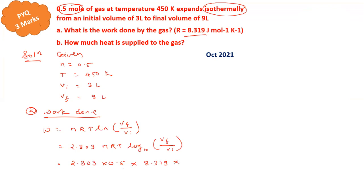And log to base 10, final volume is 9 and initial volume is 3. So this we can write as 2.303 × 0.5 × 8.319 × 450 × log(3). Now after solving this, let me do the multiplication and find out the answer.